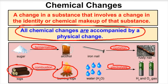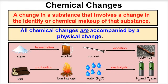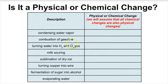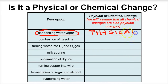Let's go through some examples to determine if each is a physical or chemical change, keeping in mind that all chemical changes are also physical changes. Condensing water vapor — water vapor turning back to a liquid — is a change in state of matter, so that's always a physical change. The combustion of gasoline — when gasoline catches fire, it's being converted into something totally different — that is a chemical change.